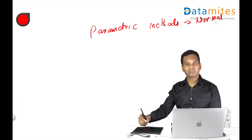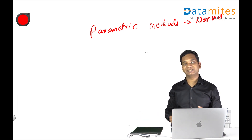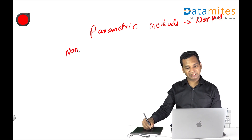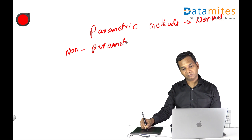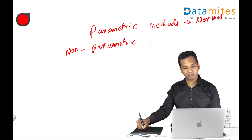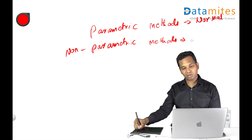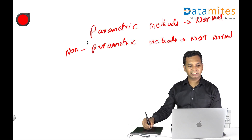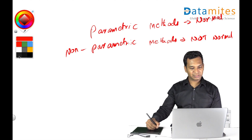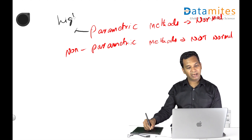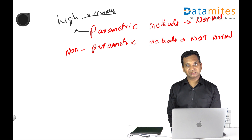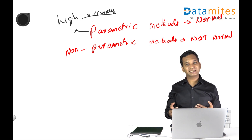For all non-normal data, you have other distributions like Bernoulli, Poisson, exponential distribution, and so on — we call these non-parametric. There are non-parametric techniques applicable for non-normal data. If data is not normal, you cannot apply parametric techniques and must use non-parametric ones. However, parametric techniques have higher accuracy, so we prefer them when the data is normally distributed. That is why we need to determine whether data is normal or not.